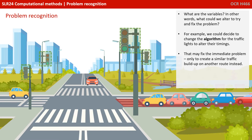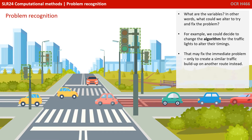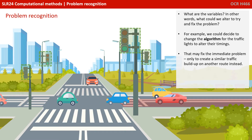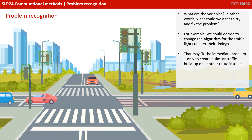What are the variables? In other words, what could we alter to try and fix the problem? For example, we could decide to change the algorithm for the traffic lights to alter their timings. That may fix the immediate problem, only to create a similar traffic build-up on another route instead.